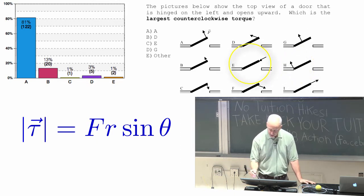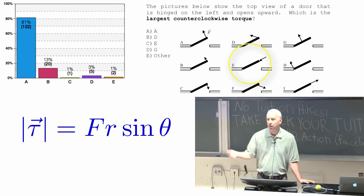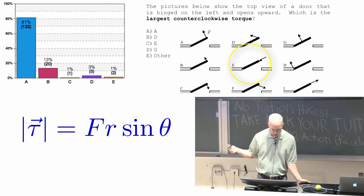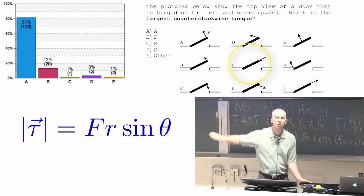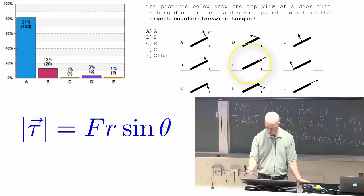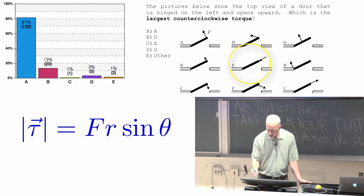What about E? Also, a method that most of you would not use to open a door, is to push straight at the hinge, which is what E is doing there. E is pushing straight at the hinge. It's doing it far away, so R is actually bigger than for A.